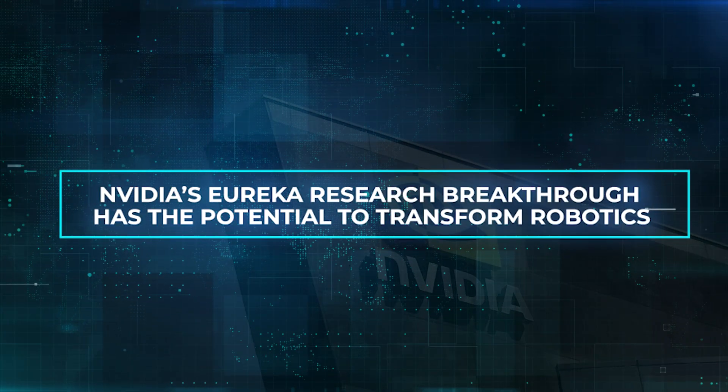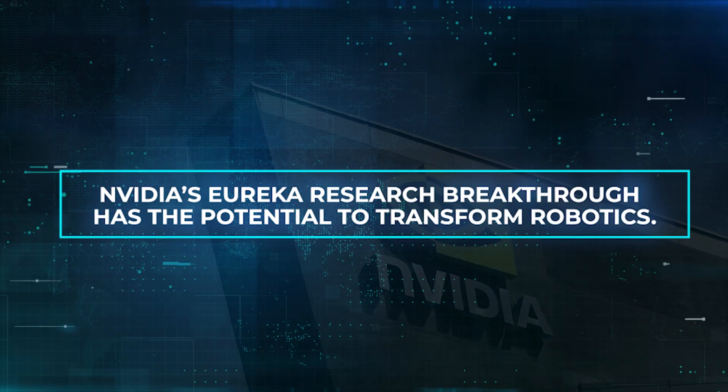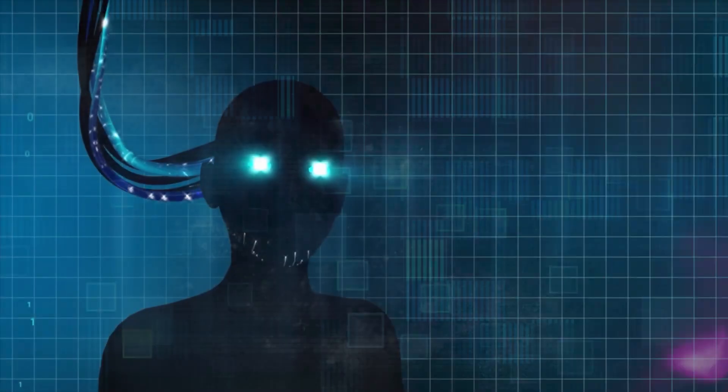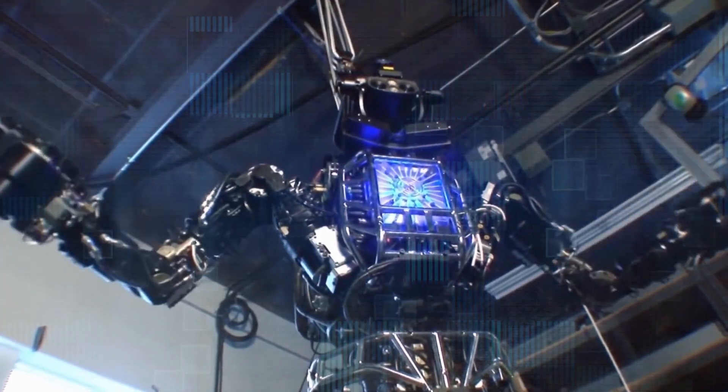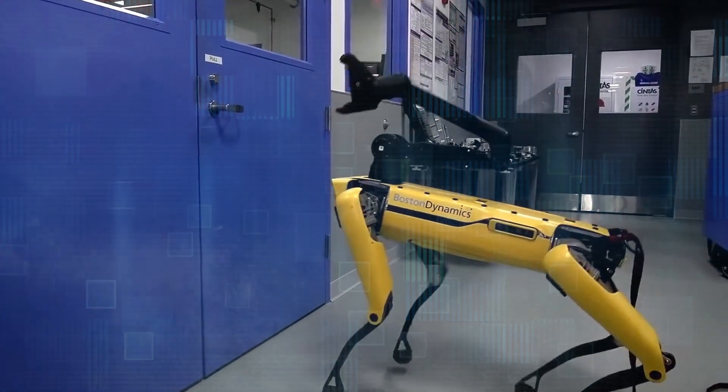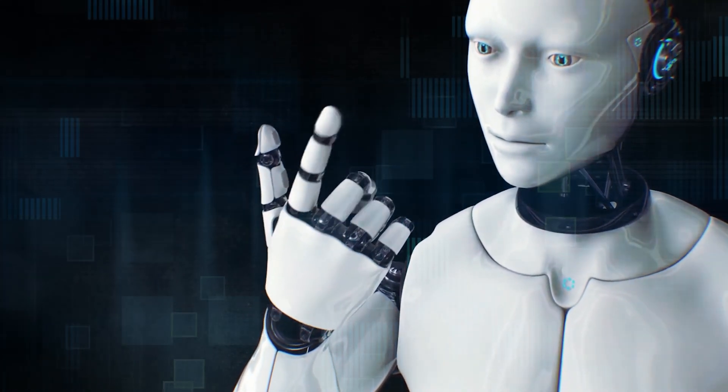NVIDIA's Eureka Research breakthrough has the potential to transform robotics. It can teach robots complex skills, bridging the gap between different levels of tasks. Its use of generative and reinforcement learning makes it efficient, as demonstrated by training a robotic hand for rapid pen spinning.